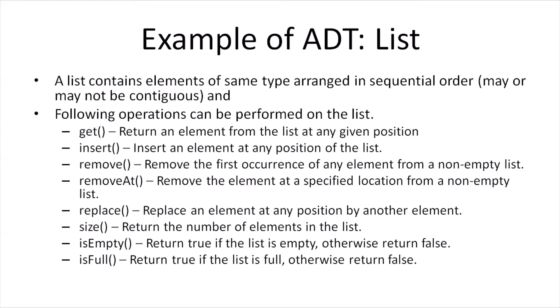The operations on a list include: get, insert, remove, removeAt, replace, size, isEmpty, and isFull. By get, we retrieve an element from any position. By insert, we add an element at any position. By remove, we remove any element in a non-empty list. By removeAt, we remove an element from a specific position. By replace, we replace any element with another. By size, we get the number of elements in the list. By isEmpty, we check if the list is empty, and by isFull, we check if the list is full.